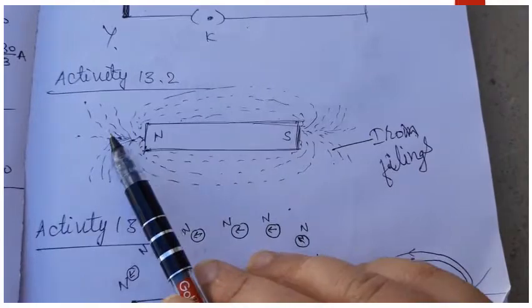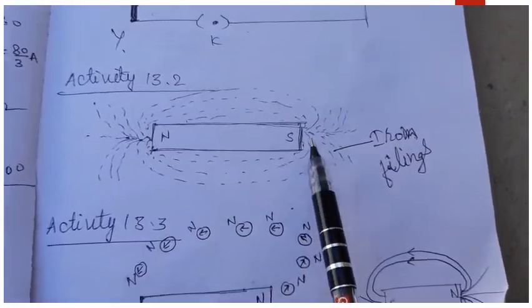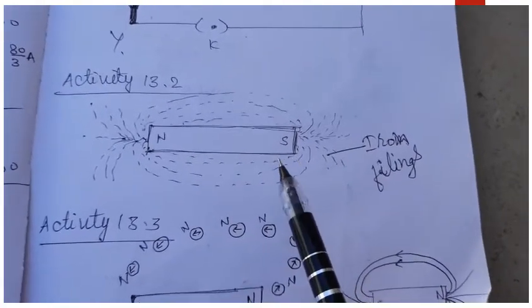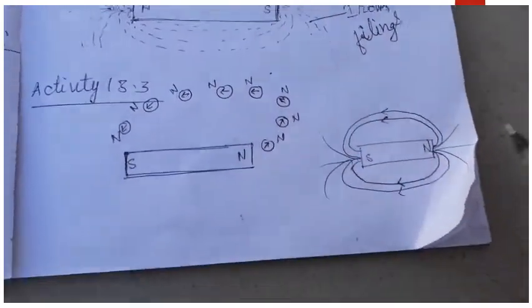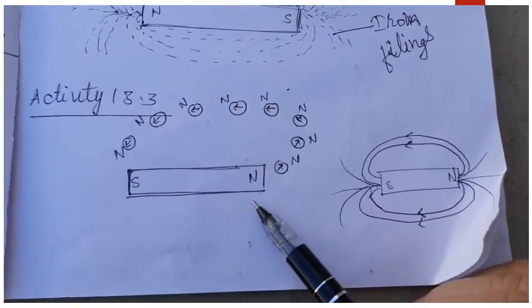This is how the magnetic field of bar magnet works. The pattern in which iron fillings arrange shows the pattern of magnetic field of bar magnet. In the next activity, 13.3, you again take a bar magnet.